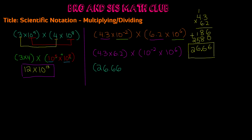Now remember one thing: when you have scientific notation, you always want your constant to be less than 10. In this case we have 26.66, which is obviously not less than 10. In order to make it less than 10, we move the decimal point one place to the left, which decreases its place value. When we do that, we get 2.666.